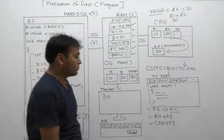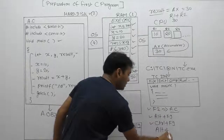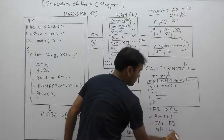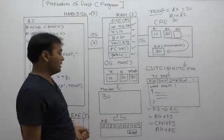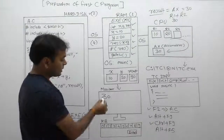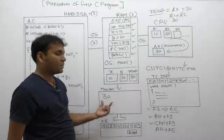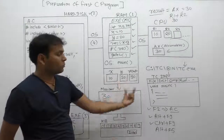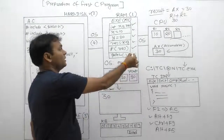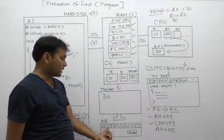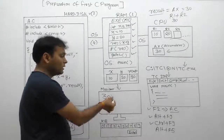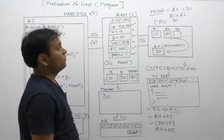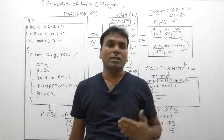The use of getch() will be discussed in detail later. Basically, getch() reads a single character from the keyboard. Without it, the output window would close immediately. When you press Enter, control exits the output and the program ends. This is all about the first C program — after this, we will discuss the whole C program one by one.